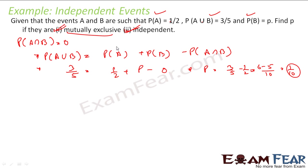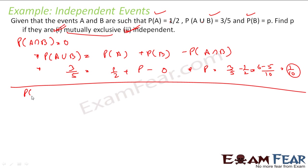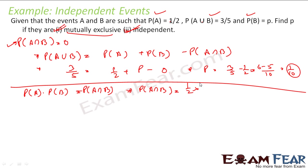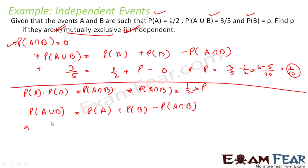For the second part — independent events — the condition is P(A∩B) = P(A) × P(B) = (1/2) × P = P/2. Using the same formula: P(A∪B) = P(A) + P(B) − P(A∩B): 3/5 = 1/2 + P − P/2. Solving this, P = 1/5. So for the same question, depending on whether the events are mutually exclusive or independent, we get different values of P.